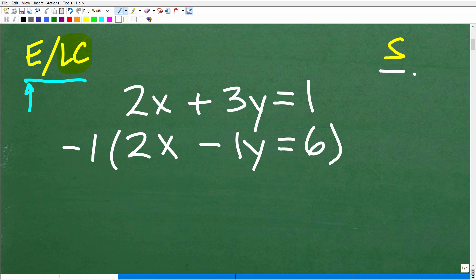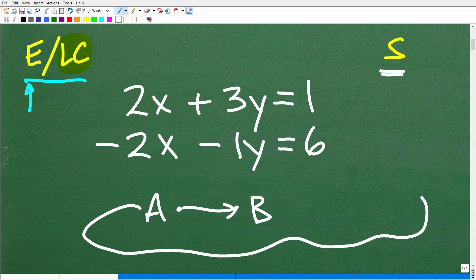Now, could you use the substitution method to solve this system right here? Of course you could. But basically, you want to think about the distance between A and B is always a straight line. That's the shortest distance. So you want to look at the problem at hand and take the most effective route. Yes, you could use a substitution method, but that's like taking the long road to get to the same destination.